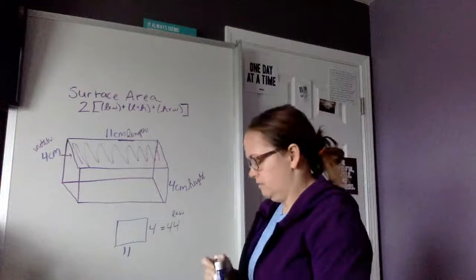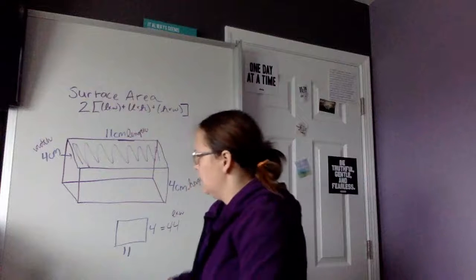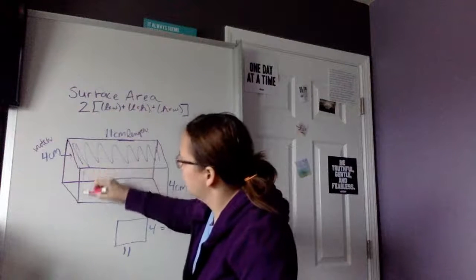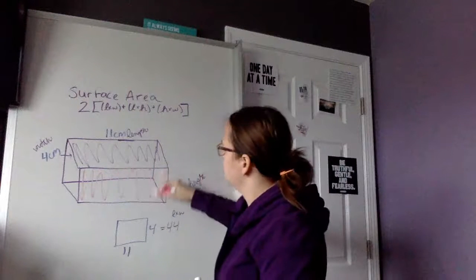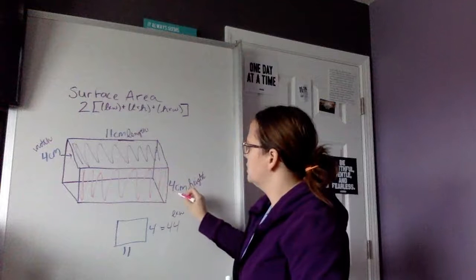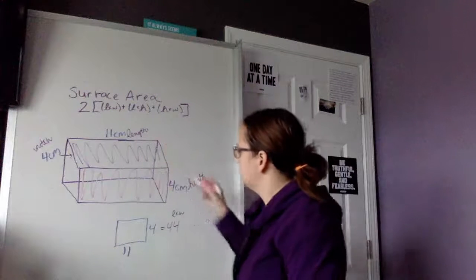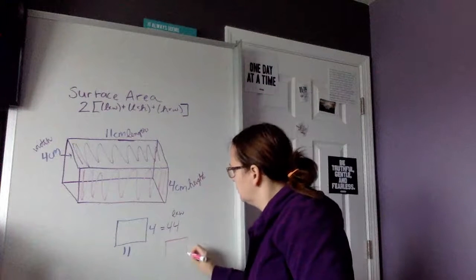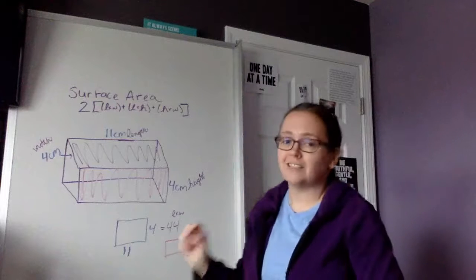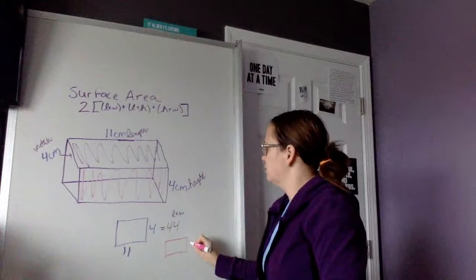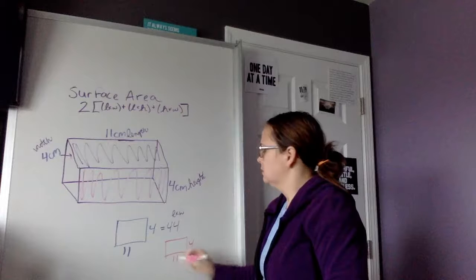Okay? So then if I want to find the area of the front or of this one, I'm going to use this number and this number. So, newsflash, that is still 4 times 11. It's just a different 4. Okay?